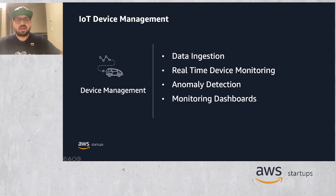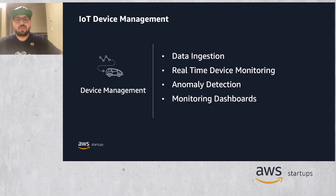For IoT device management, monitoring connected devices in real-time can provide valuable information that can help you maintain the reliability, availability, and performance of your devices. You can track time series data to gain insight on device connectivity and activity. These insights can help you detect anomalies in real-time and react quickly to changing conditions and emerging situations.